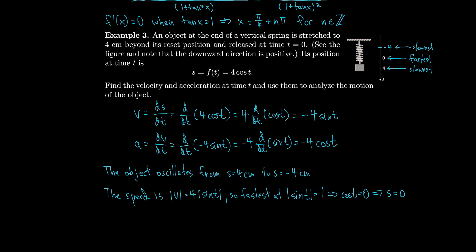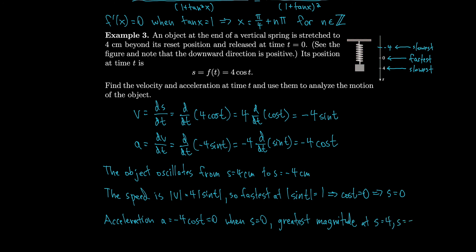For acceleration: a equals minus 4 cos t. That's 0 when s is 0, because when s is 0, cos t is 0 and vice versa. So acceleration is 0 at the equilibrium position, and it has the greatest magnitude at s equals 4 and s equals minus 4. So when the object is at its slowest, that's when the acceleration is at its greatest — at the top and bottom.